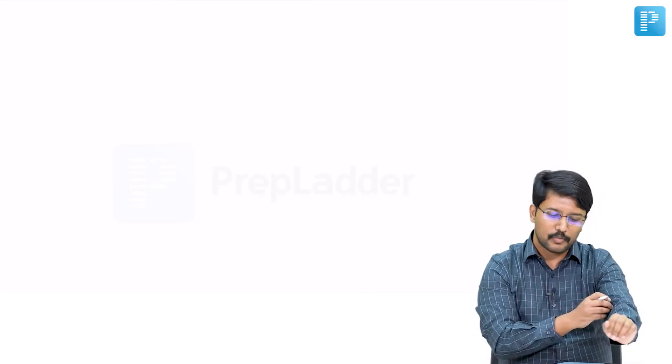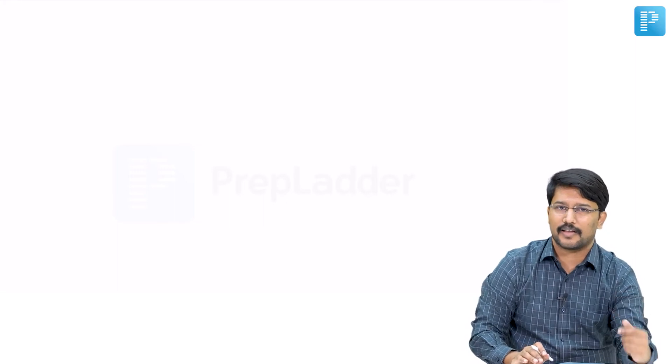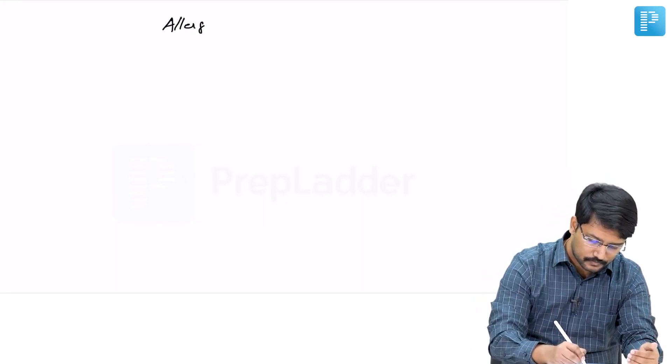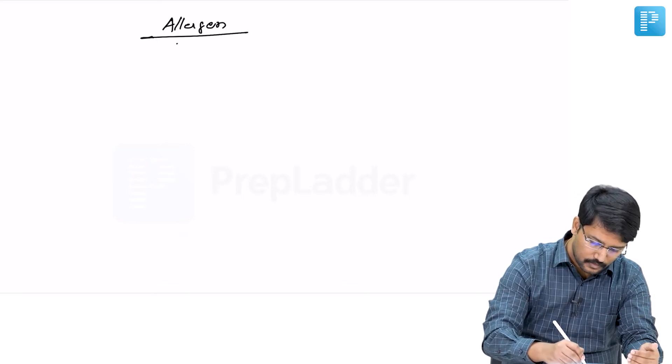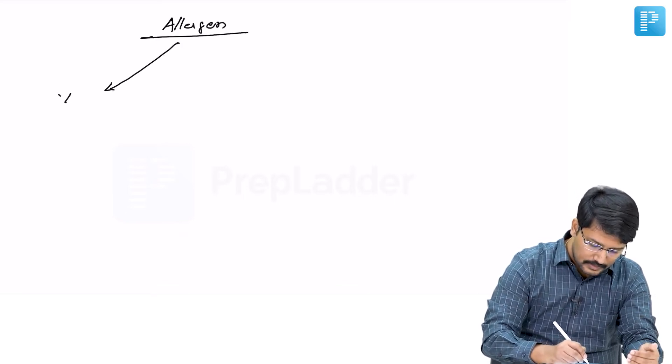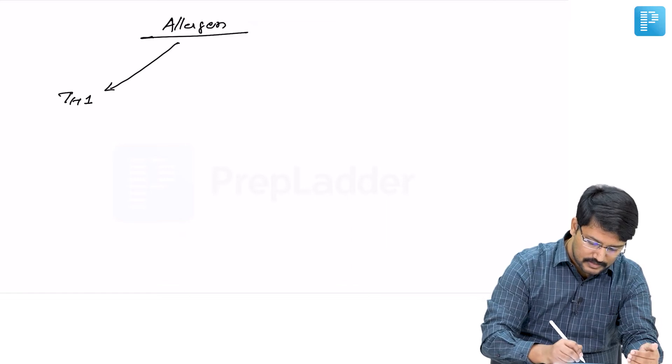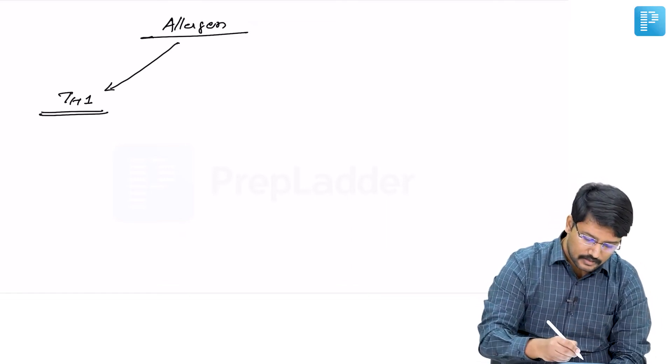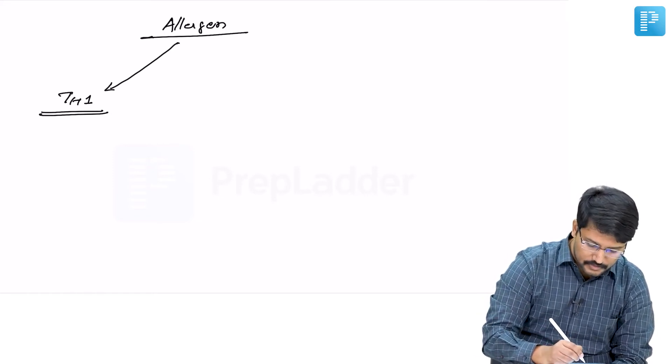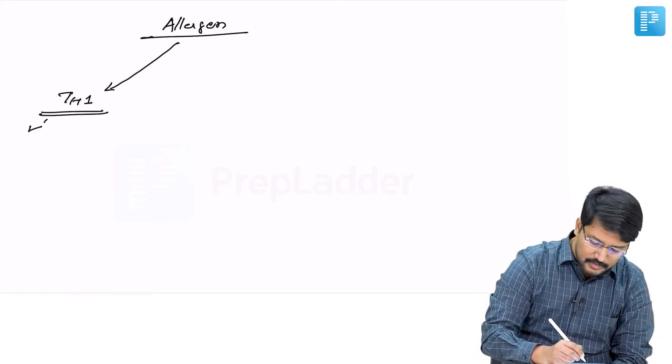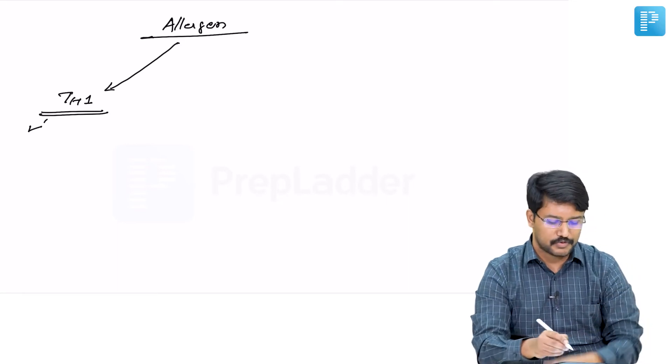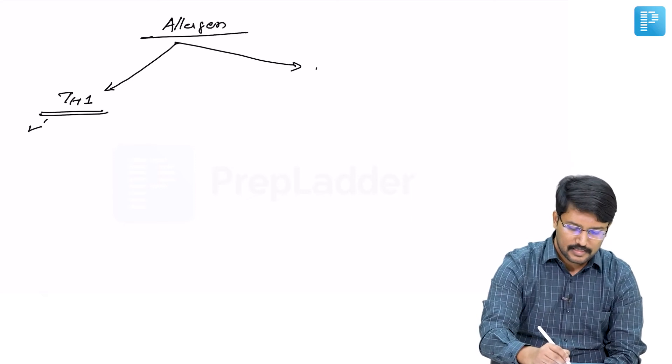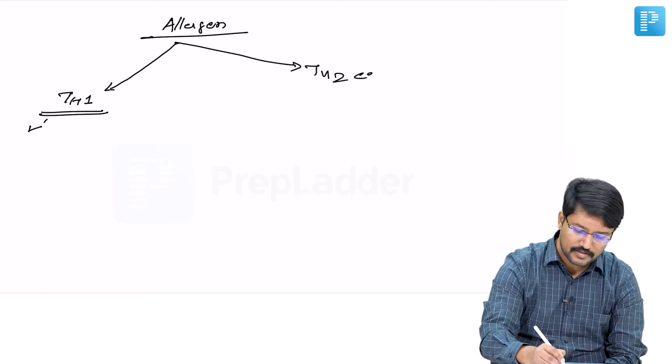In a normal person, whenever we are exposed to an allergen, we mount Th1 cells against those allergens, and the Th1 cells get accustomed with the allergen exposure. But the same trivial allergen in an asthmatic, when exposed, they mount a Th2 cell response.